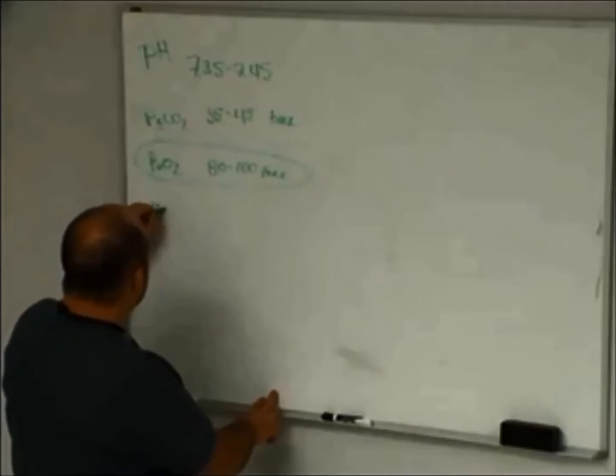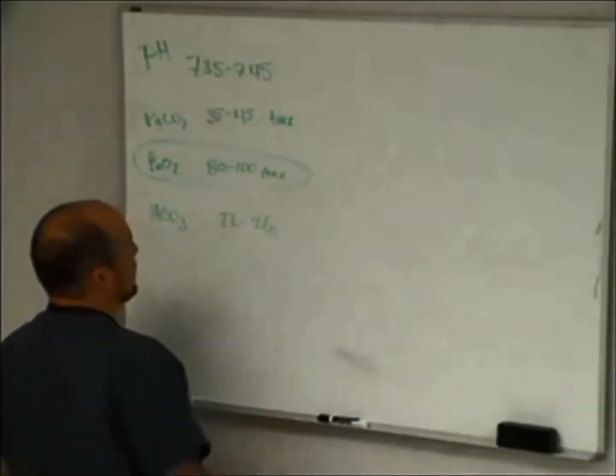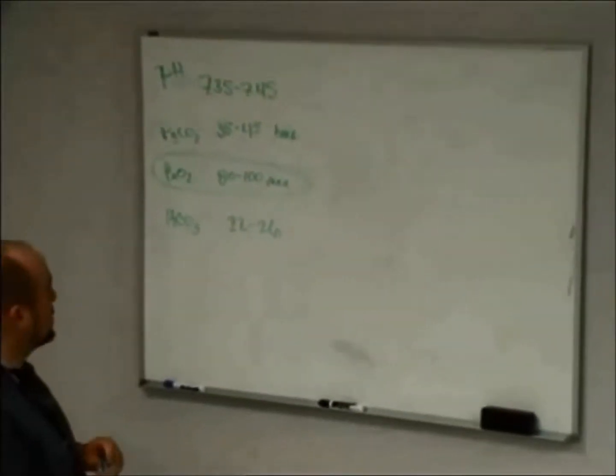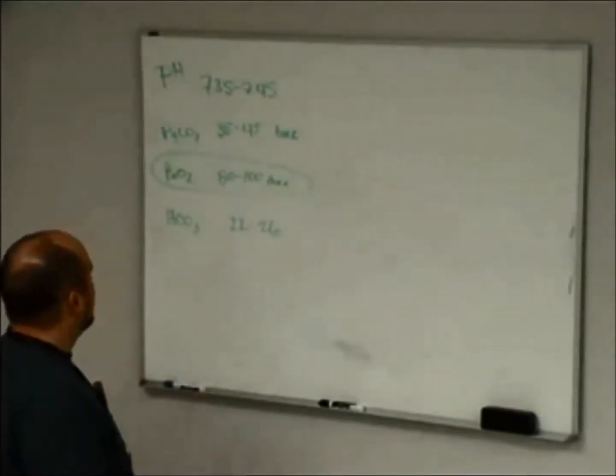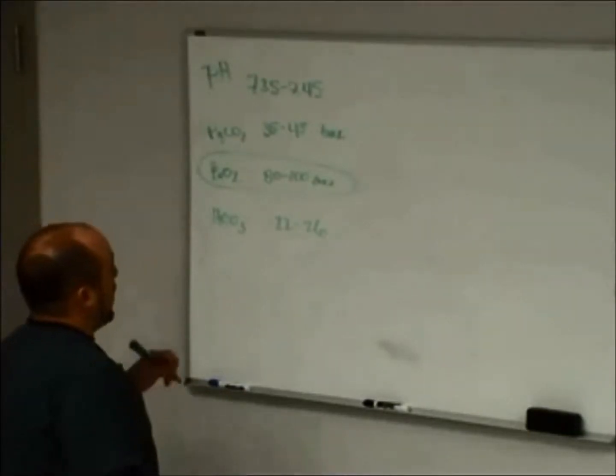And the last one is bicarb, and it is 22 to 26. It varies from wherever you're from. I'm pretty sure the Union Hospital normal values are 22 to 26. We're going to use these today. So these are normal values. It's good to know this so you know which way we're going.